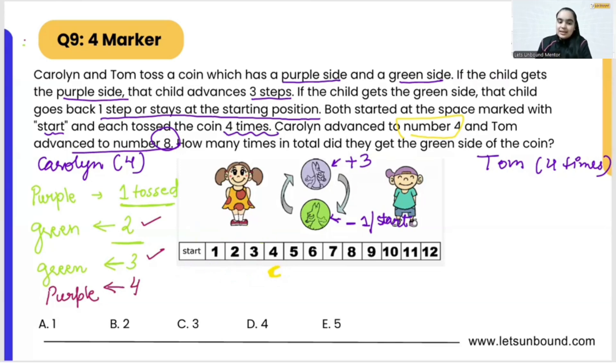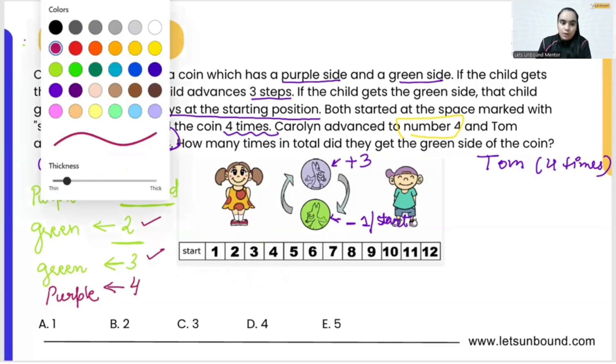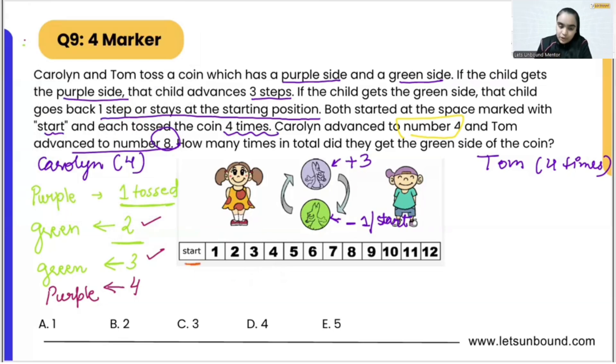Now let's focus on Tom. Tom is at start and he will advance to number eight. We need to make again the combinations of tosses, only four times, so that in the end we are at number eight.